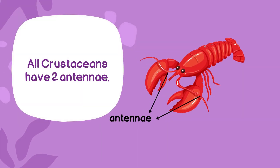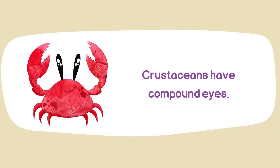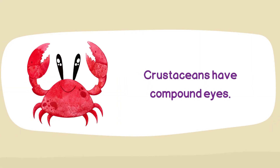All crustaceans have two antennae, and they have compound eyes. That means they have many tiny eyes so that they can see very clearly.